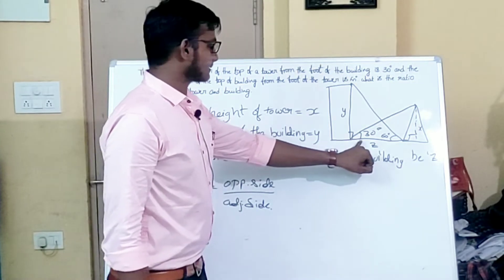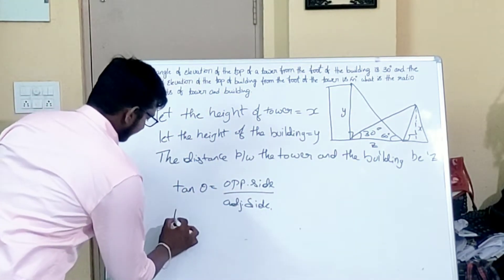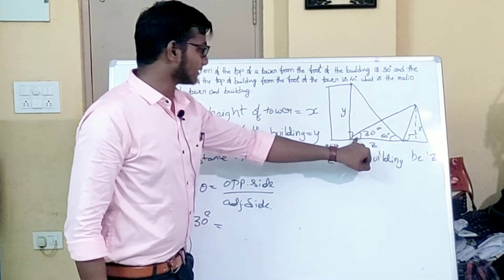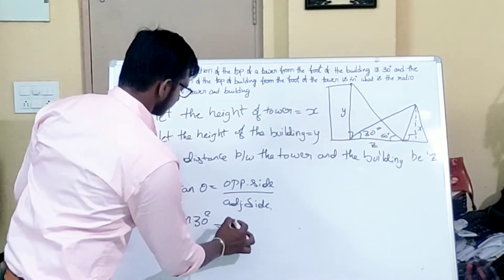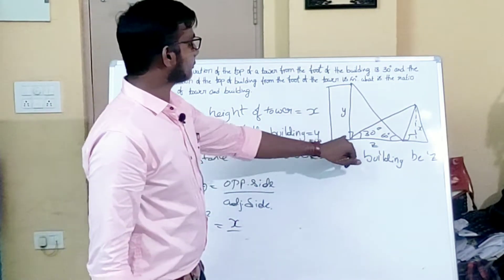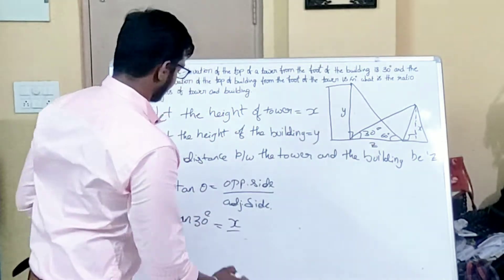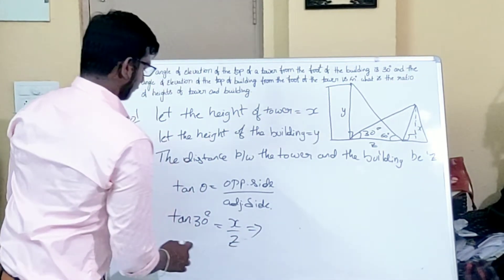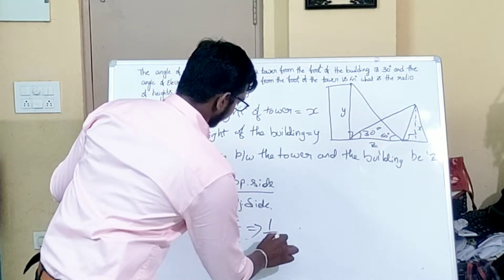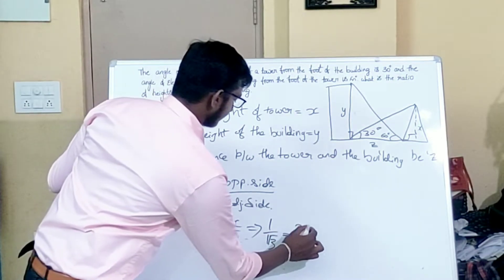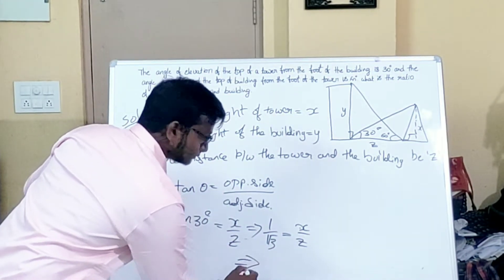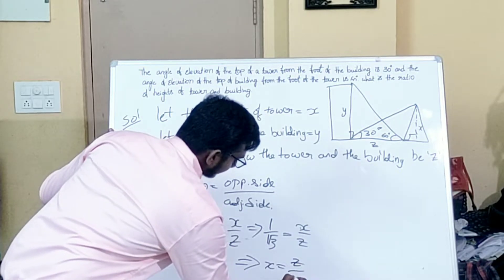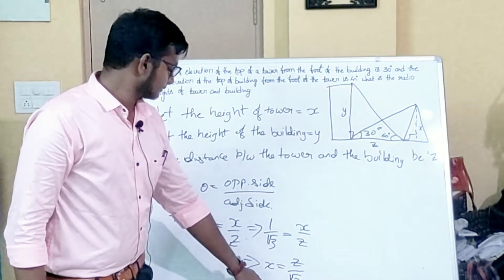If θ equals 30 degrees, the opposite side is x and the adjacent side is z. So tan 30° = x/z. Since tan 30° = 1/√3, we get 1/√3 = x/z.